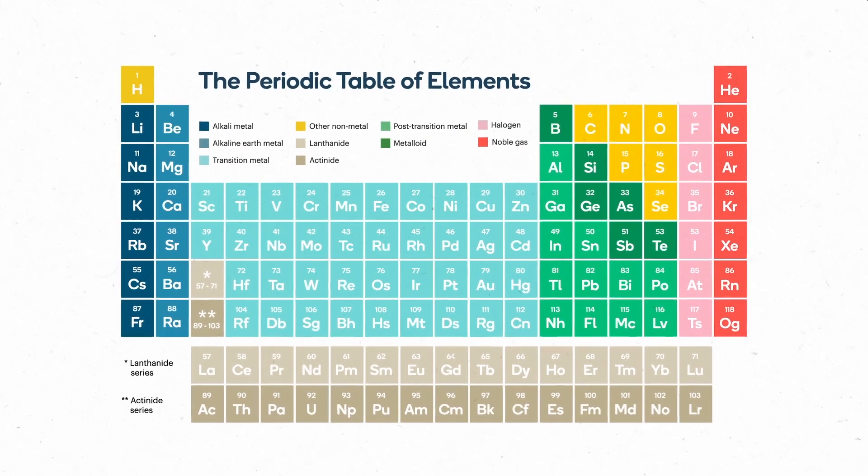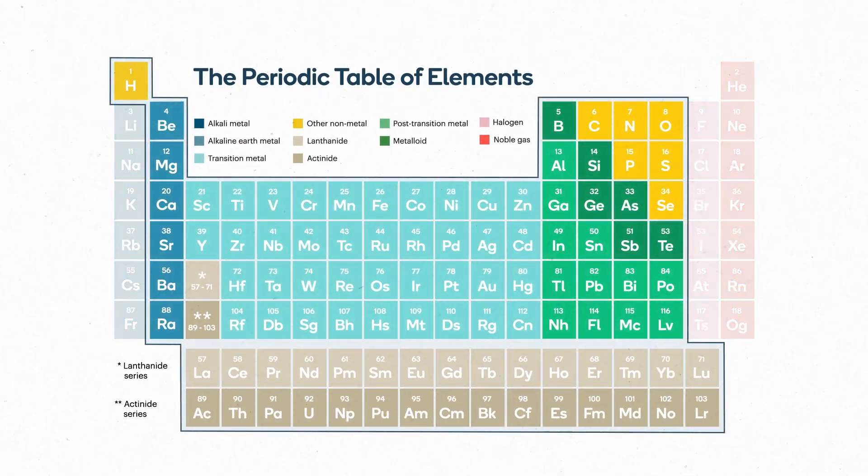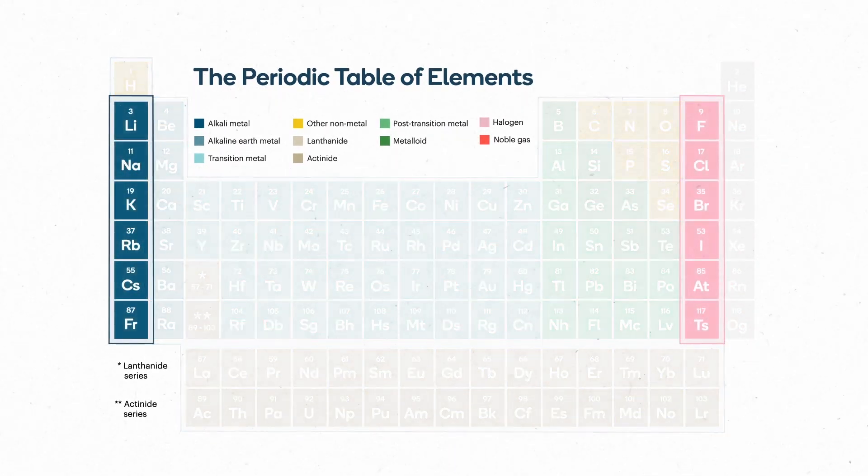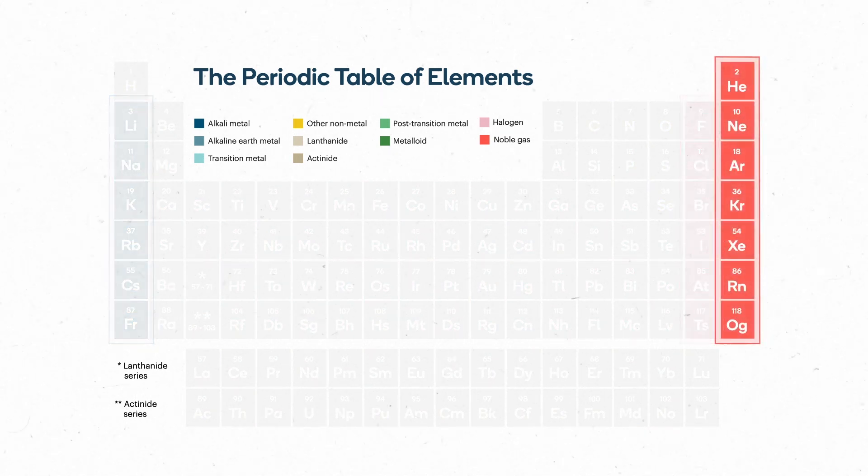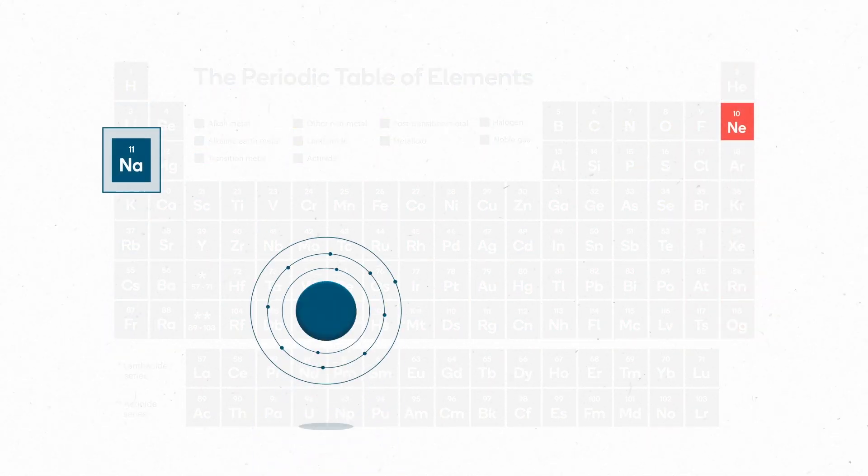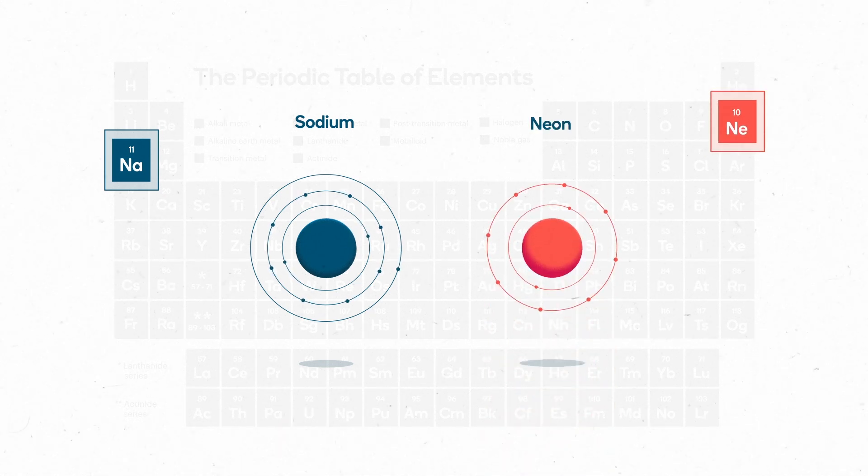The periodic table can help us explain why some elements are reactive, some are really reactive, and others are just not. Let's begin our story by looking at why sodium is reactive but neon isn't.